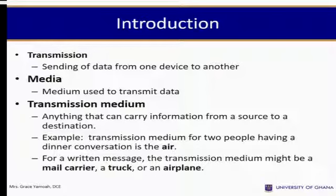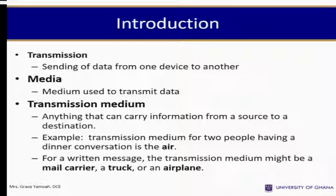Introduction. Transmission is the sending of data from one device to another. The medium is the channel used to transmit data. A transmission medium is anything that can carry information from a source to a destination. For example, the transmission medium for two people having a dinner conversation is the air. For a written message, the transmission medium might be a mail carrier, a truck, or an airplane.